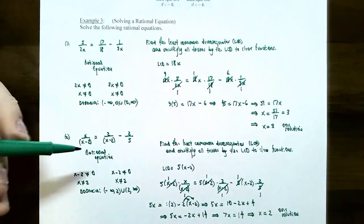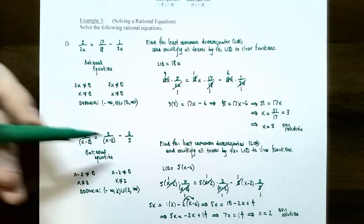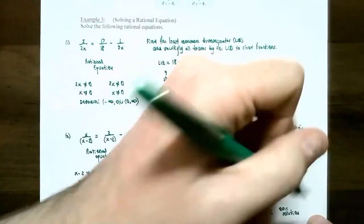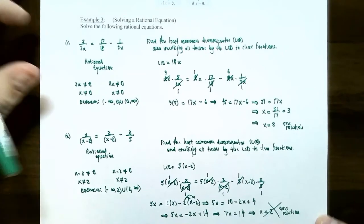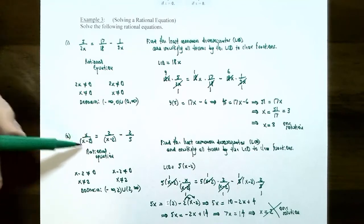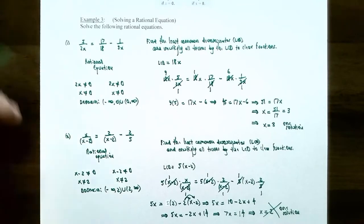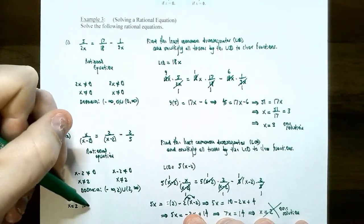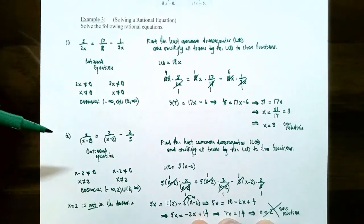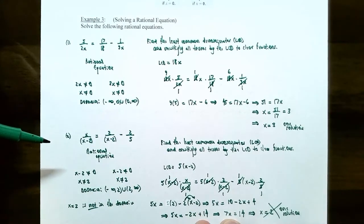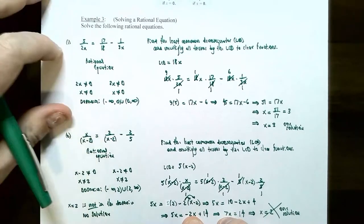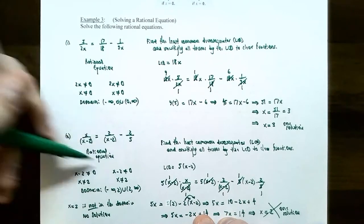But if you remember, we checked the domain earlier — x equals 2 is not part of the domain of this rational equation. Even though x equals 2 was the algebraic result, it's not the solution because plugging in x equals 2 gives 2 divided by 2 minus 2, which is 2 divided by 0 — undefined. So x equals 2 is not in the domain. Since the only value that could have made the equation true is excluded, the equation has no solution. There are no values of x that will ever make this equation true — it is always false.